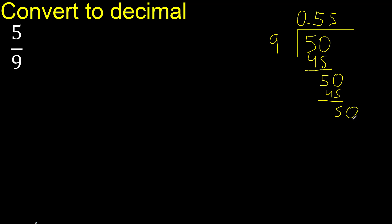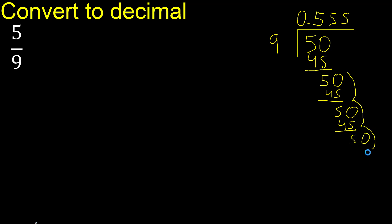Complete. 9 multiply by 5 is 45, subtract — complete. Here it repeats, therefore 5 repeats.